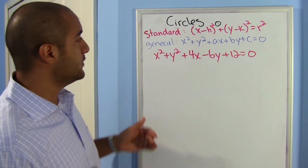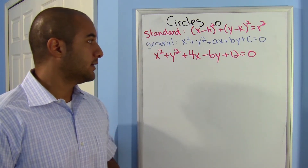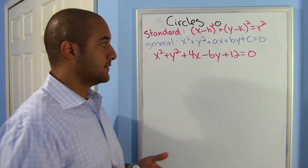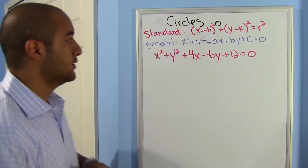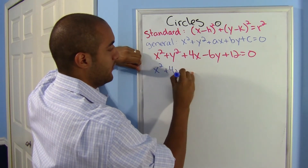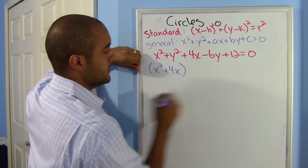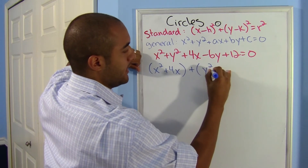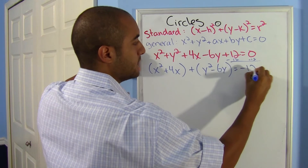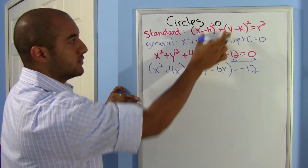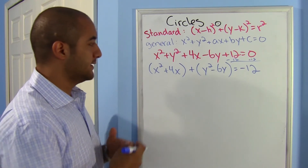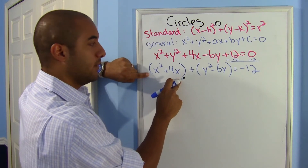What if you're going the other way — from general to standard? Or if they give you a general form and ask you to graph it, notice it's not very helpful: it doesn't tell you where the center is or what the radius is. So you would have to put it in standard form anyway. What I'm going to do is put my x's together — x squared plus 4x in parentheses — plus y squared minus 6y, and move that 12 over, so minus 12. They're starting to look like our standard form, but I need to be able to factor this, so I'm going to complete the square.